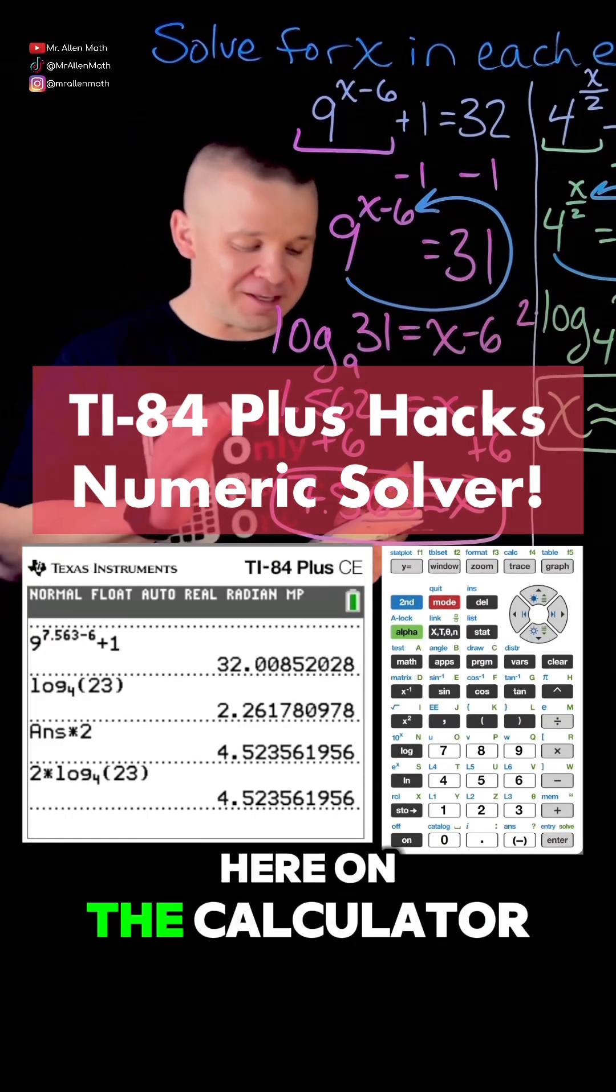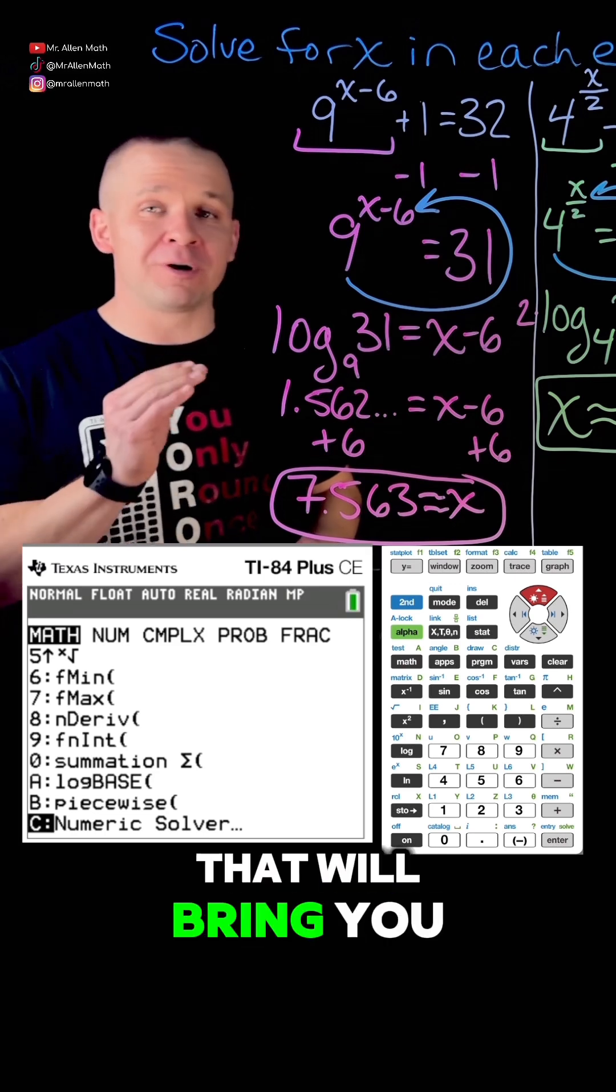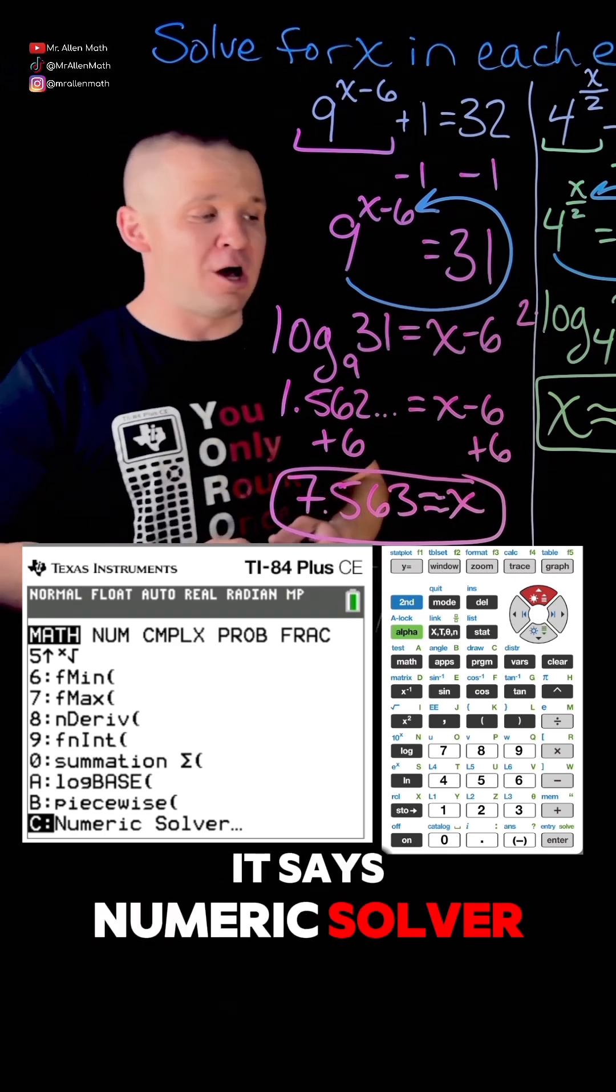Alright, now for the hack I promised. On the calculator, you're going to hit the math button and arrow up. That will bring you to the bottom of the menu - it says numeric solver. It's hidden way below the math menu.